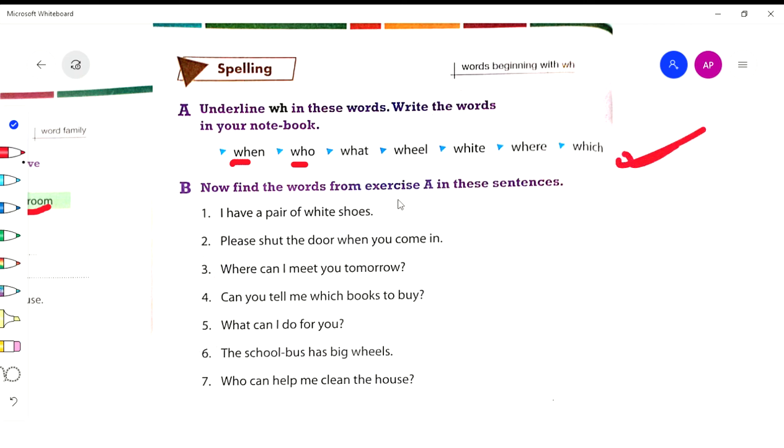Now find the words from Exercise A. Where can I meet you tomorrow? Can you tell me which books to buy? What can I do for you? The school bus has big wheels. Who can help me clean the house?